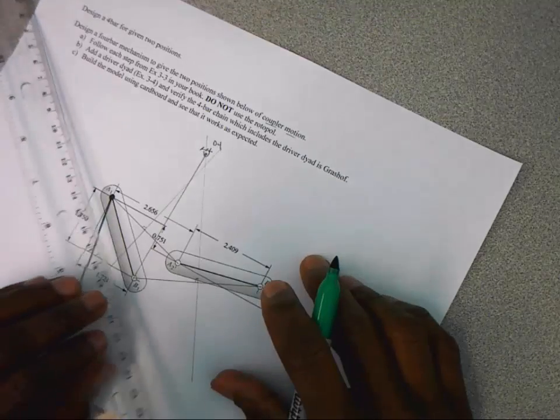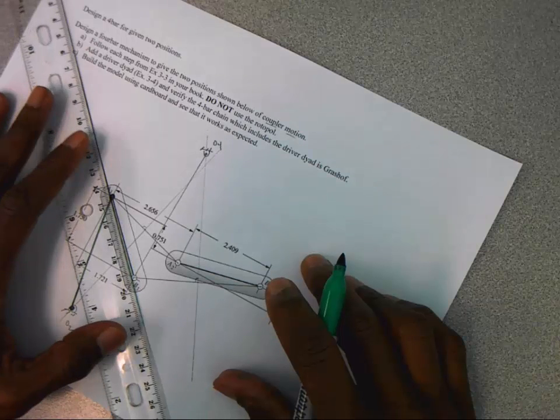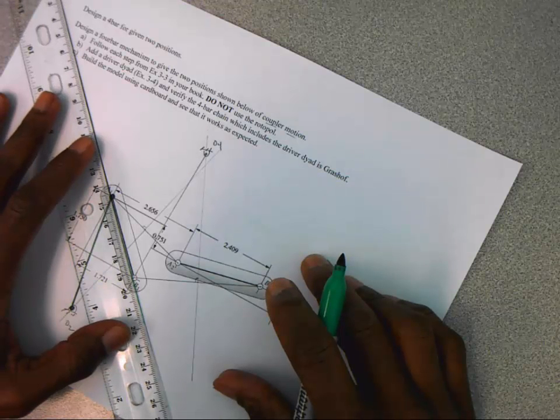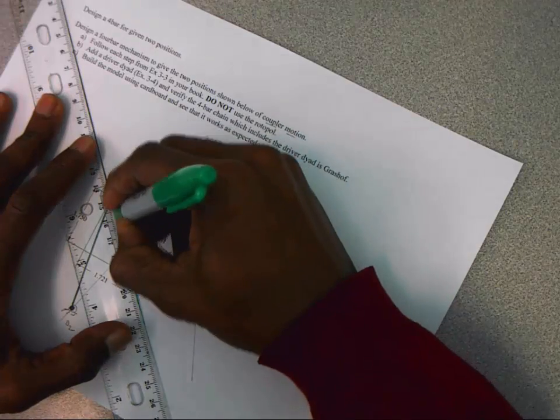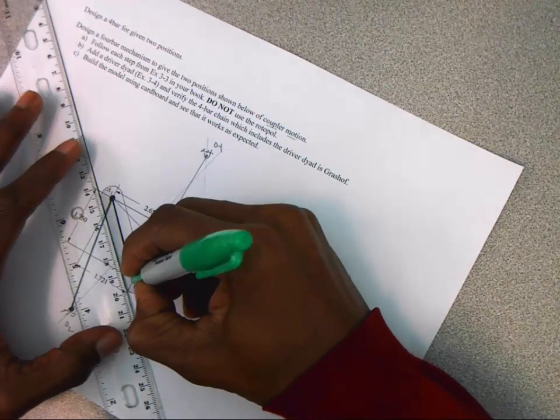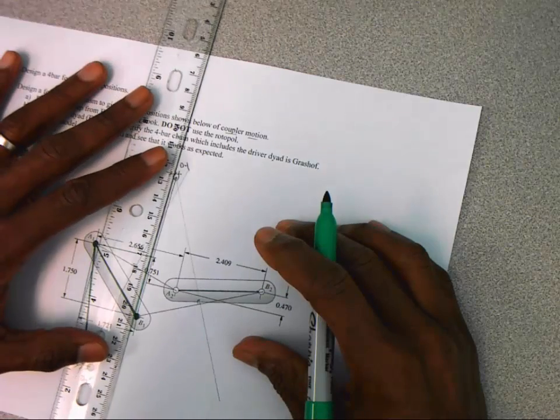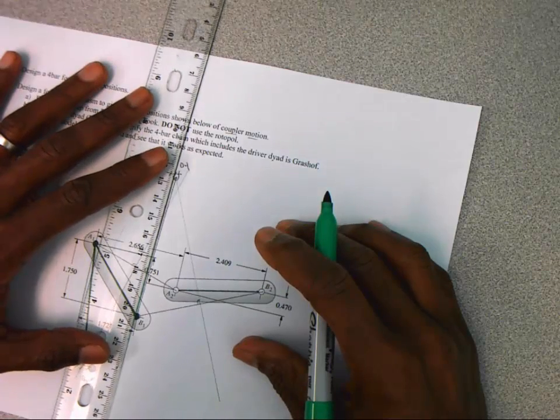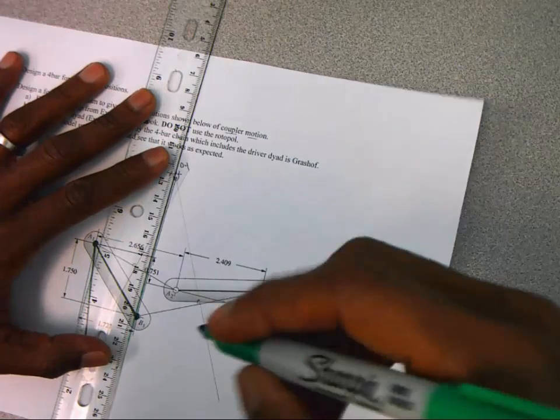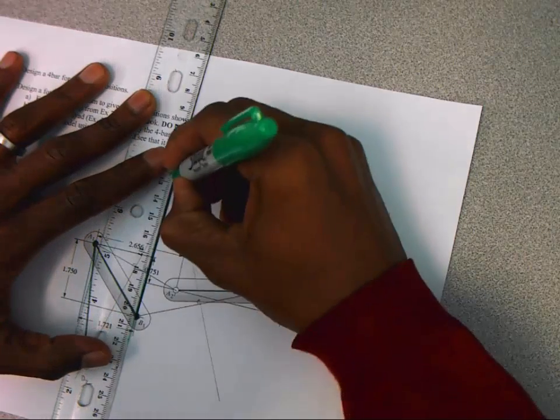And so this is going to be one of my rockers here from O2 to A1. And I'm going to make little circles here represent joints. And then from A1 to B1 is my coupler. Draw it in joint here, my B joint. And then finally my rocker, my last rocker from O4 to B1.